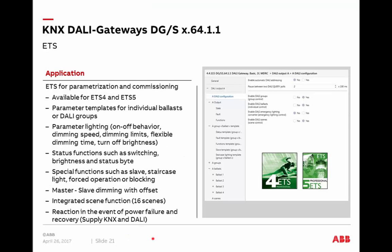Coming to the ETS: main features and parameters. ETS 4 and ETS 5 are supported. One nice feature is the ability to create parameter templates — a collection of parameter settings that can be used as a template for ballasts or groups. Instead of adjusting each ballast or group individually, you can apply the same parameters from a template for projects where most ballasts share the same settings. Of course, individual exceptions are also possible. Jürgen will show more about this in practice later.